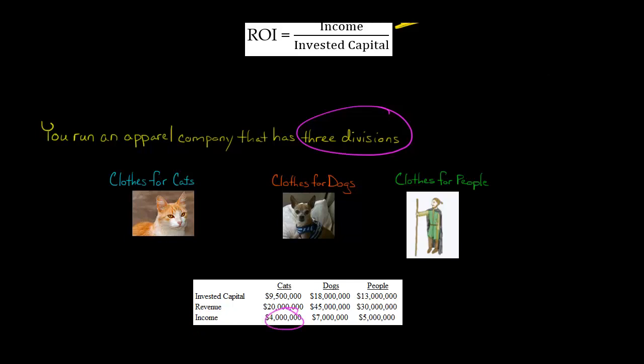So we've got cats. They did $4 million in profit. Dogs was $7 million, and people division was $5 million. Now, I've also put the revenue here, but actually, you don't need the revenue to calculate the ROI unless I didn't tell you what the income was and you were given a problem where you had the expenses and then you had the revenue. Then you would have to take revenue minus expenses to calculate the income. But I'm just giving you the income here so we can actually ignore the revenue in terms of calculating the ROI.